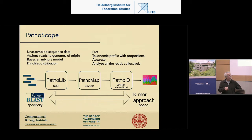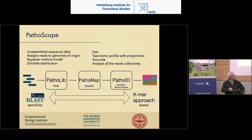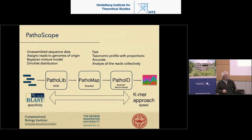Pathomap does the mapping of sequencing reads to the library. Like all good bioinformaticians, we use Bowtie — we steal useful tools and pop them in. Bowtie has some memory issues as the library gets really big, so we're working on replacing that. PathoID is our Bayesian mixture model that does the reassignment weighting and tells us which genomes those reads map to, and we get an output.